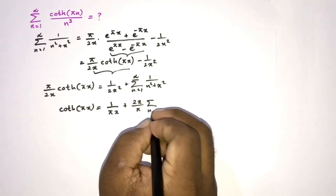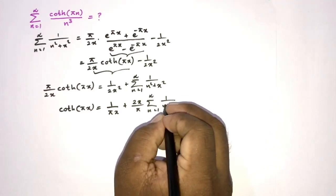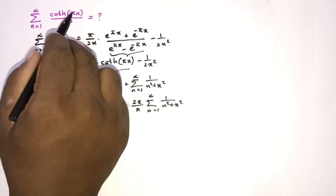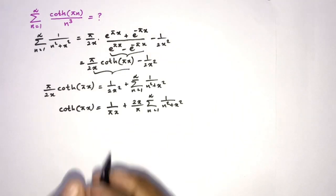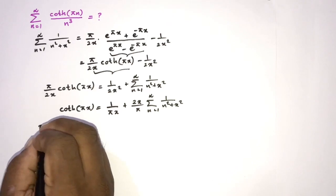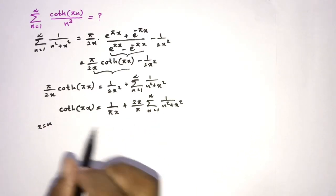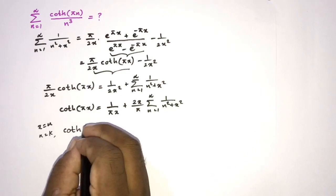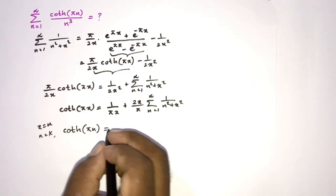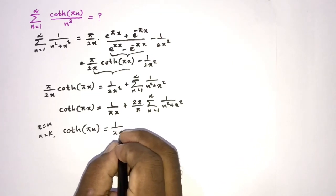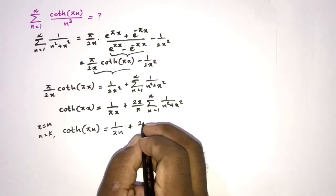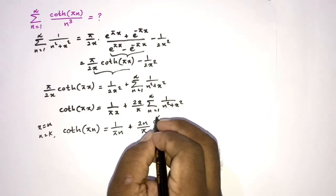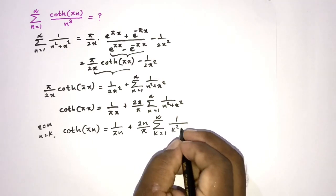We multiply by 2x and divide by pi, giving us hyperbolic cotangent of pi x equals 1 over pi x plus 2x over pi times the sum from n equals 1 to infinity of 1 over n squared plus x squared. In our question we have hyperbolic cotangent of pi n, so I substitute x with n and rename the summation index to k. So hyperbolic cotangent of pi n equals 1 over pi n plus 2n over pi times the sum from k equals 1 to infinity of 1 over k squared plus n squared.